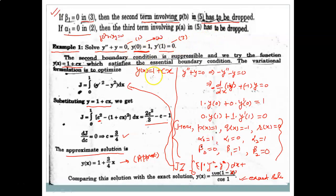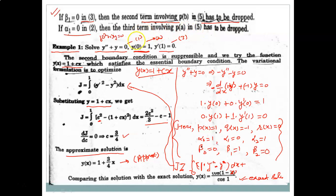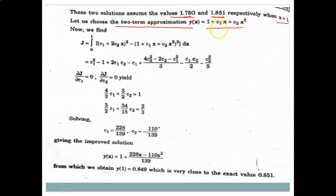With one arbitrary constant c, the error is significant. If we choose a solution involving two arbitrary constants c₁ and c₂ — for example y(x) = 1 + c₁x + c₂x² — then putting x = 0 gives y(0) = 1, so the essential boundary condition is still satisfied.